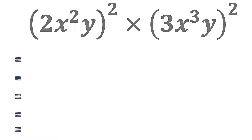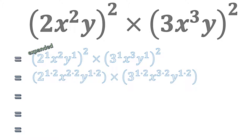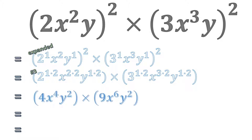In our next example we have, in brackets, 2x squared times y all raised to the power of 2, multiplied by, in brackets, 3x cubed times y all raised to the power of 2. We distribute the outside powers into each bracket using our third rule, which gives us 4x to the power of 4 times y squared — noting that 2 squared equals 4 and 3 squared equals 9 — times 9x to the power of 6 times y squared.